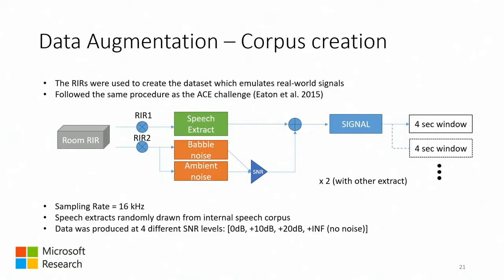Once data collection was completed, we moved on to corpus creation. This is pretty much the same setup as the ACE challenge — two room impulse responses belonging to the same room were taken, one was convolved with a randomly chosen speech extract, and the other was convolved with either bubble noise or ambient noise. An SNR was chosen between four levels: 0 dB, +10 dB, +20 dB, and infinite — meaning no noise was included in some examples. The signals were added together, then split into four-second windows.